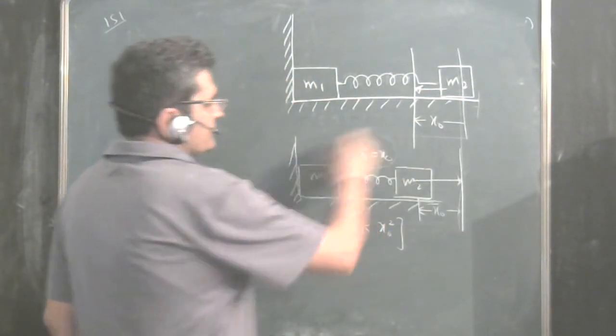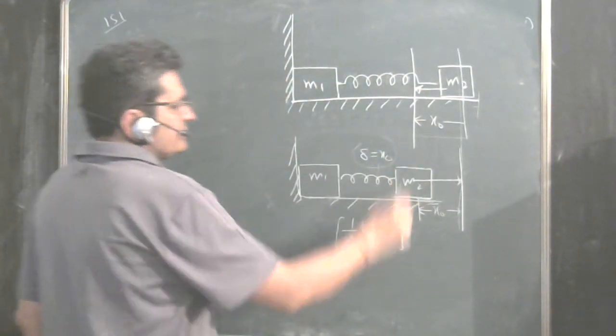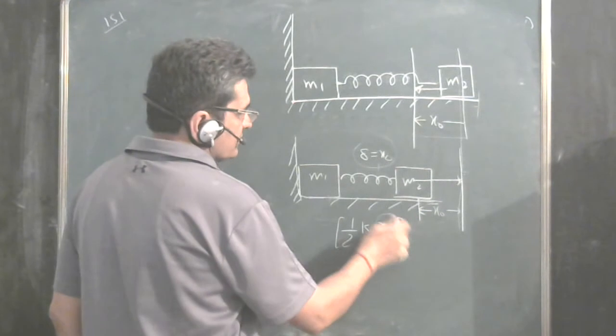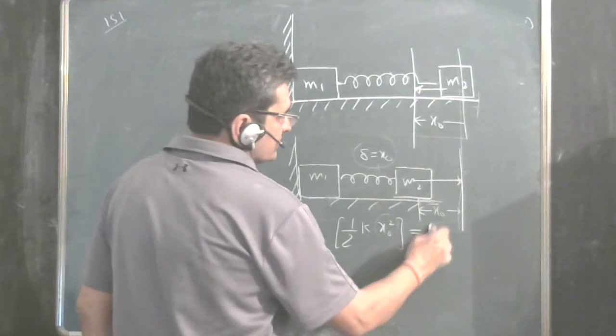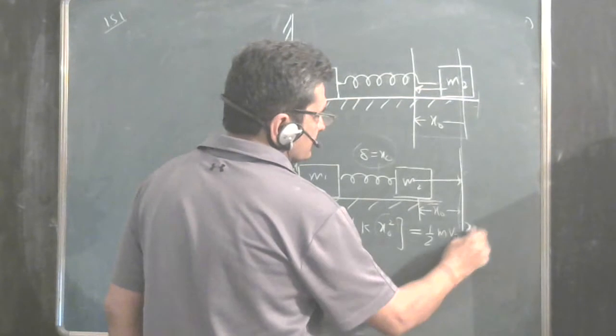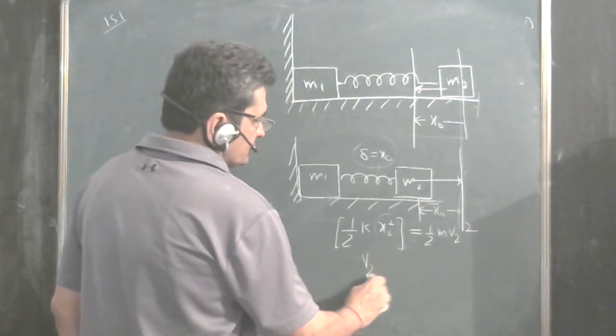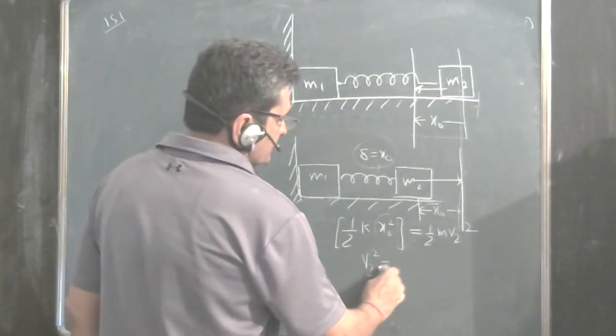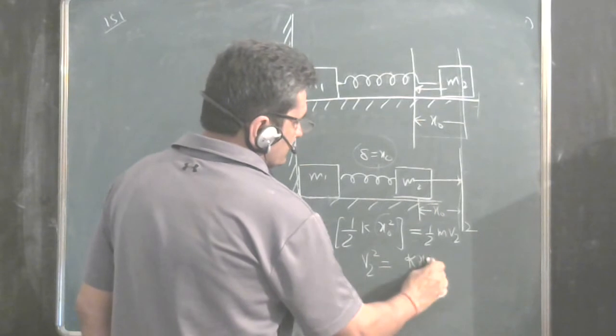The spring's energy is completely released. This is the full energy of the spring. And it gives energy to the mass is half M v2 square. So V2 square is equal to k x0 square upon M2.